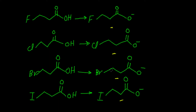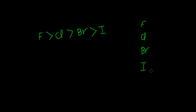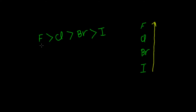Looking at these four conjugate bases, we find they are the same except for substituting a hydrogen on the terminal carbon with the corresponding halogen. All these halogens have a negative I effect. Comparing the negative I effect of all these halogens, the trend increases in this direction, and this negative I effect parallels electronegativity. So the fluorine atom is the strongest negative I group, and the iodine atom is the least.